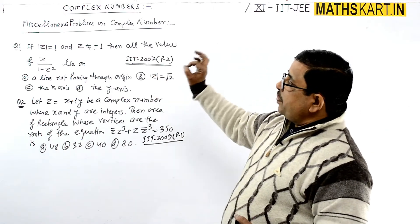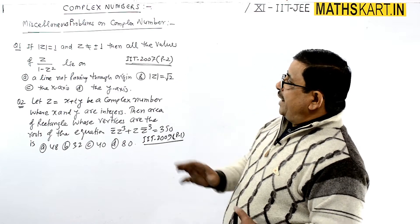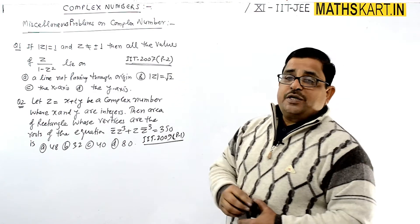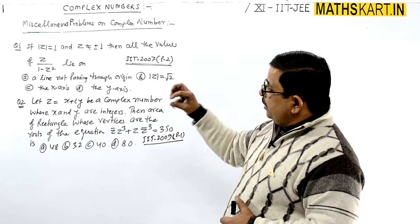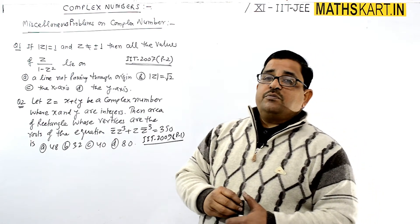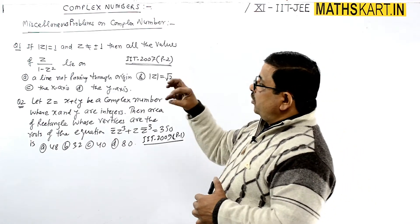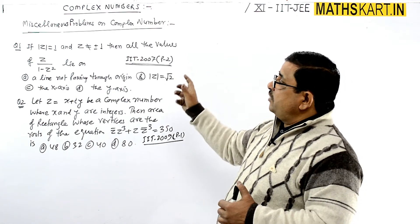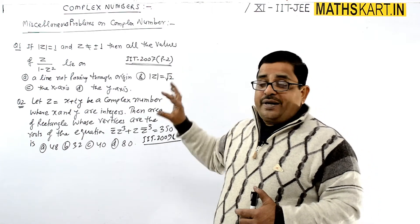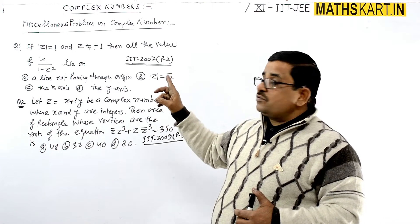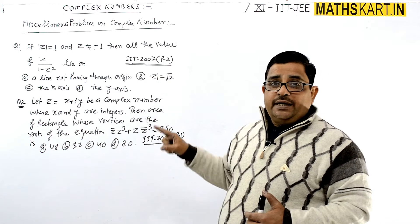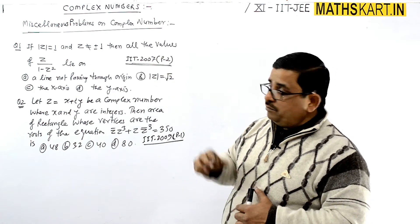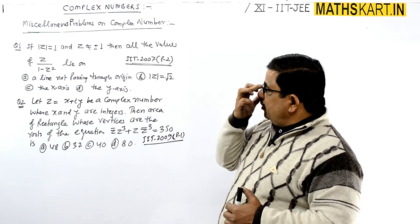First question: if the modulus of z is 1 and z is not equal to plus or minus 1. So the complex number is such that modulus of z is 1, but z itself is not plus or minus 1. Note that the modulus of plus or minus 1 is also 1, so we exclude those — but modulus is 1.